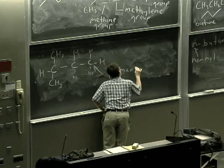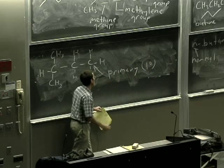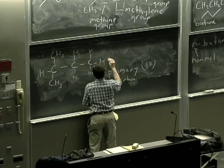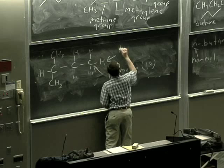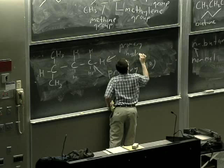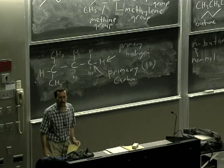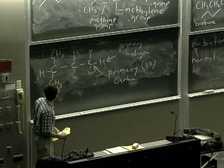We describe a carbon with one other carbon as a primary carbon. You'll often see this as 1°, 1-degree carbon. And the hydrogen that's attached to it described as a primary hydrogen. This type of distinction is important because primary hydrogens and secondary hydrogens and tertiary hydrogens have different reactivity.